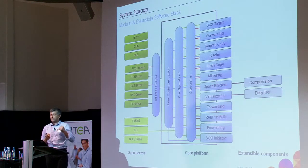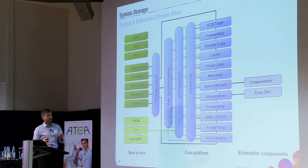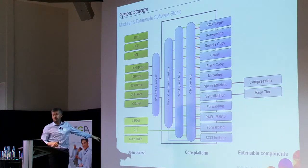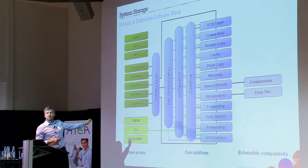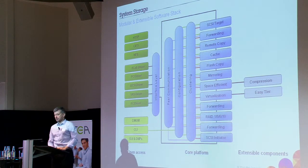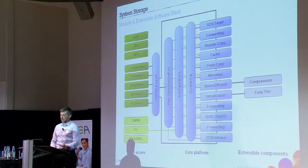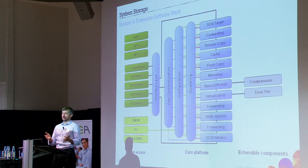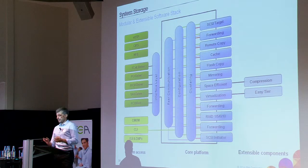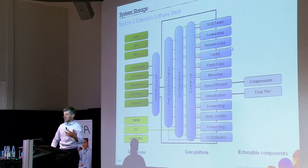Why is this possible? Because the software built for Storewise is built in three parts. First is open access — different possibilities to access the system, and also API for software to create your own application. The next part is the core platform: the interface layer, the communication layer, and of course clustering. There is no possibility to avoid clustering, because we have to build storage systems that can work with high availability across your IT infrastructure. On the core platform you have everything related with storage: remote copy, caching, flash copy, mirroring, space-efficient copies, and so on.